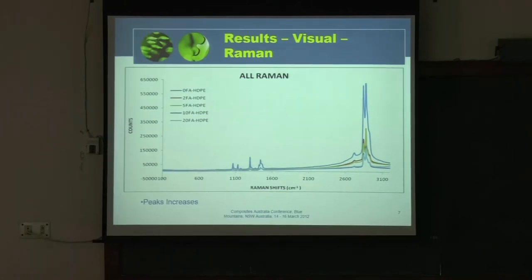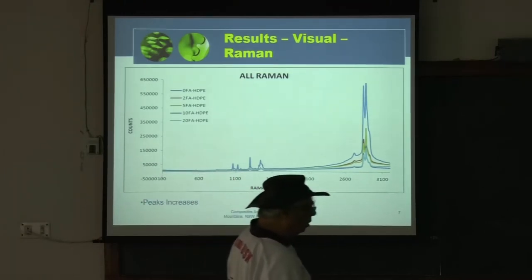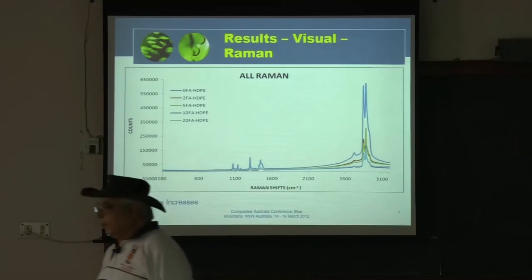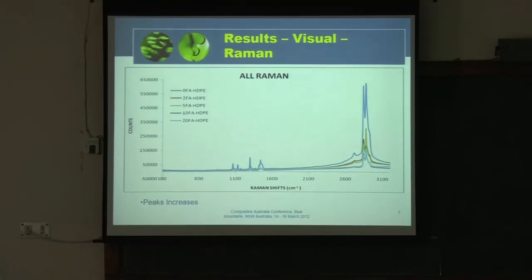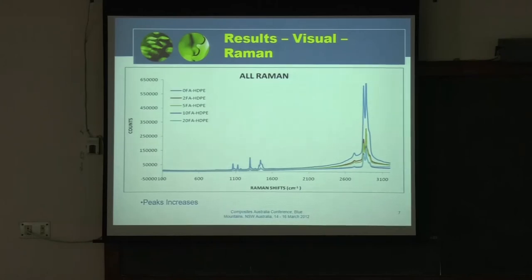This shows Raman counts, and this is where Dr. Amr Madha helped Imrana Kabir, the student who was making all the composites. The Raman peaks for 0 percent fly ash in high density polyethylene show characteristic peaks. As you keep adding 2 percent, 5 percent, 10 percent, and 20 weight percent fly ash, the peak positions remain reasonably the same but shift a little bit. The peak intensity starts coming down as fly ash content increases.